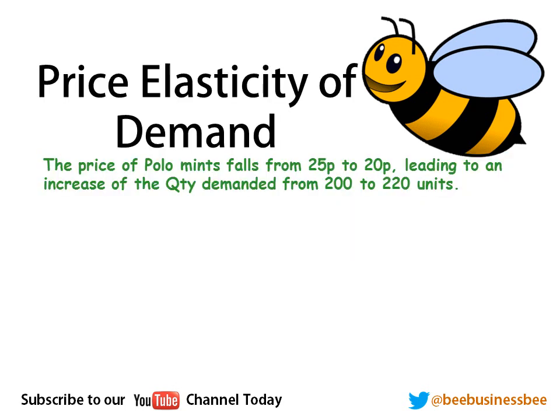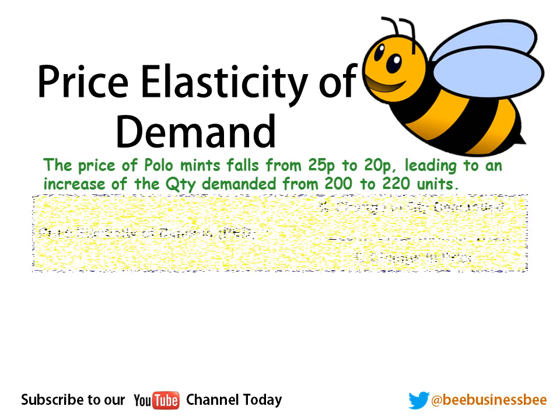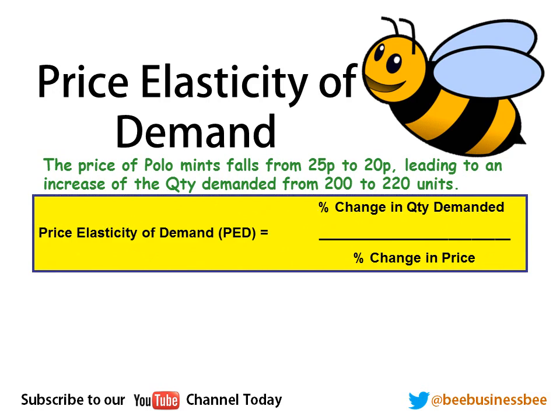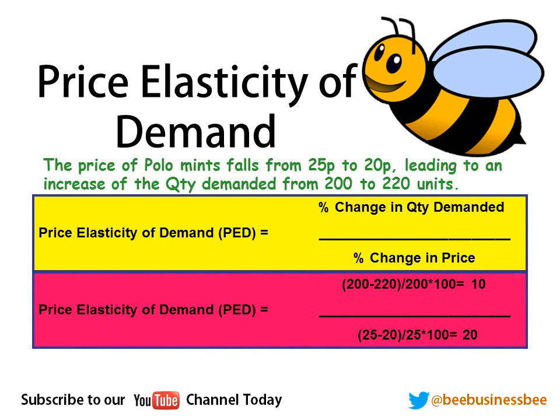Let's take a more complex example. The price of polar mints falls from 25p to 20p, leading to an increase in quantity demanded from 200 to 220 units. First, write out the formula: PED equals percentage change in quantity demanded divided by percentage change in price. For quantity demanded: 220 minus 200 gives a change of 20; divide by the original of 200, times 100 — that's 10%. For price: 25p minus 20p gives 5p; divide by the original 25p, times 100 — that's 20%. So 10 divided by 20 gives 0.5, or minus 0.5.